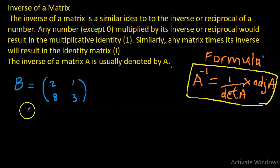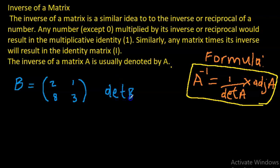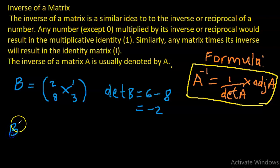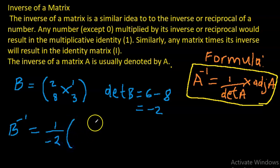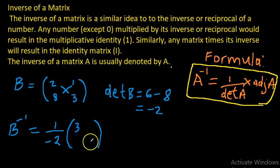Suppose we have matrix B equal to [2, 1; 8, 3] and we're asked to find the inverse of B. Let's find the determinant of B first: 2 times 3 is 6, take away 1 times 8 which is 8, so the determinant of B is 6 minus 8 equals minus 2. The formula for B inverse is 1 over the determinant of B times the adjoint of B, so 1 over minus 2 times the adjoint. For the adjoint, we switch the elements in the leading diagonal — getting 3 and 2 — and change the signs of the other diagonal — giving minus 1 and minus 8.